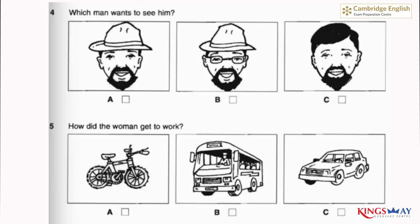Five. How did the woman get to work? Oh, the traffic's terrible today. Yes, it took me 40 minutes by bus. Well, I drove and it took me an hour. An hour? It's probably quicker by bicycle. Now listen again. Oh, the traffic's terrible today. Yes, it took me 40 minutes by bus. Well, I drove and it took me an hour. An hour? It's probably quicker by bicycle.